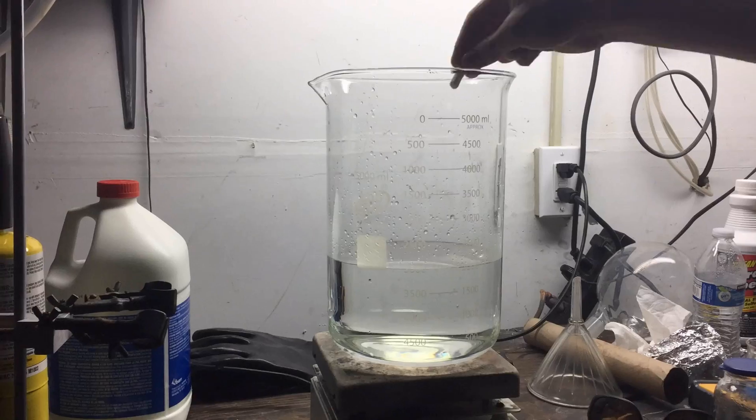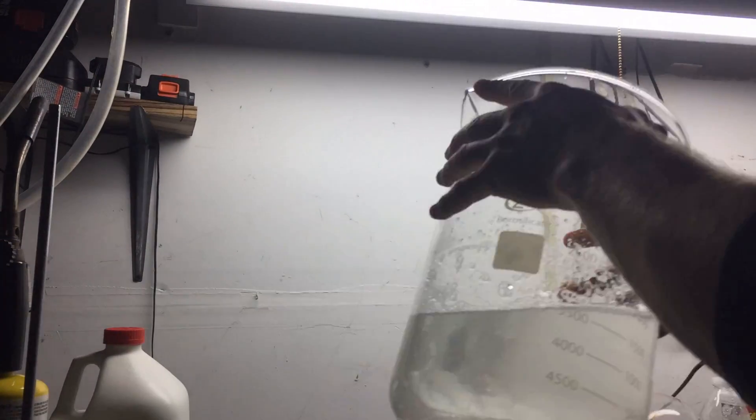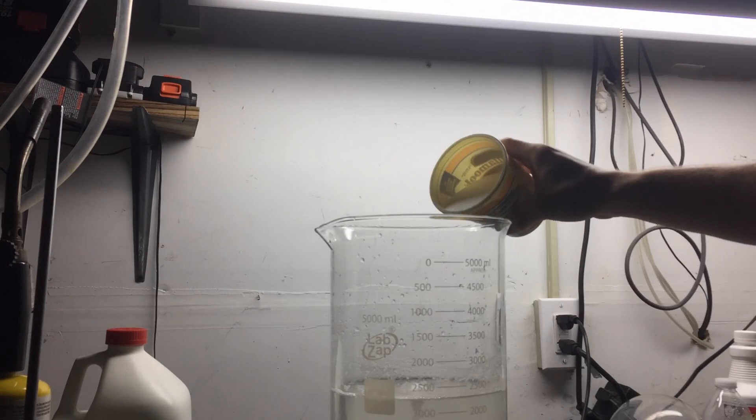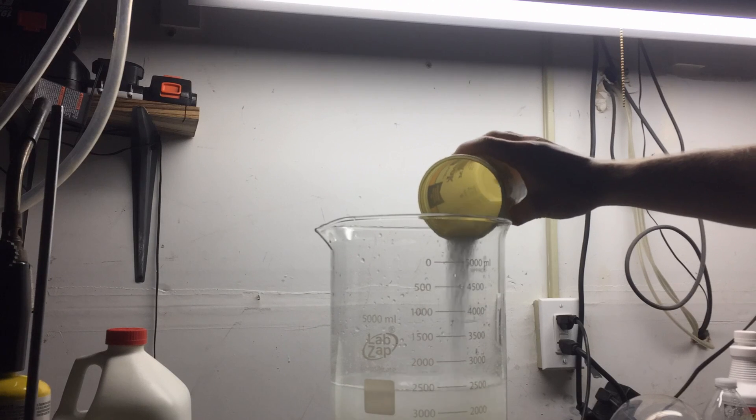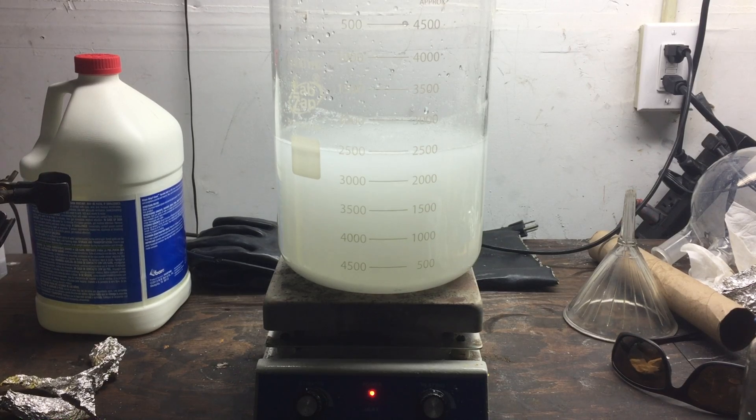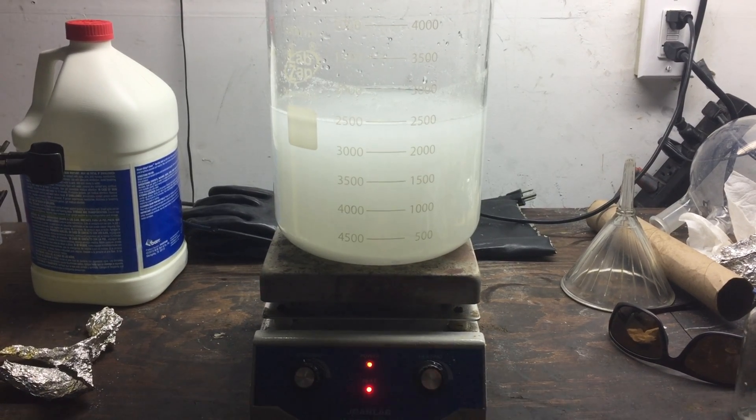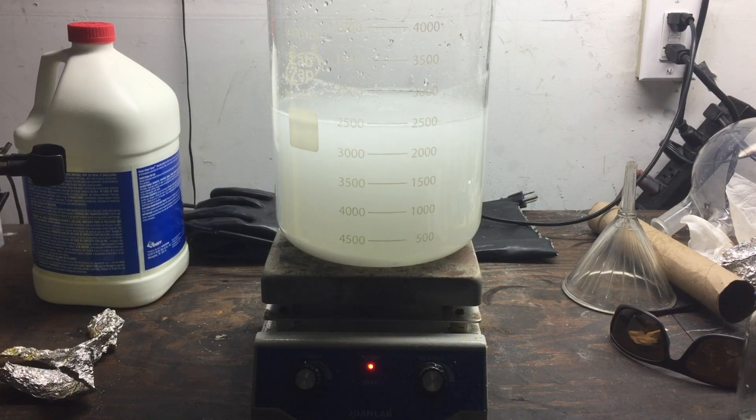Once everything was weighed out, I added all of the salts to about 2 liters of water, and I tossed in a stir bar. The stir bar was turned on, and it helped mix everything together and make sure everything got dissolved. You'll notice that the solution appears quite opaque, and initially I thought that this was due to undissolved salts, and so I started a light heating.